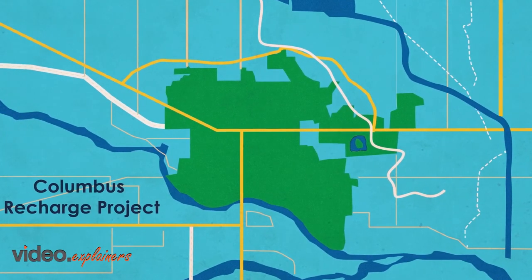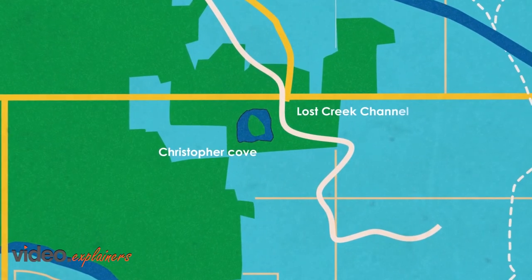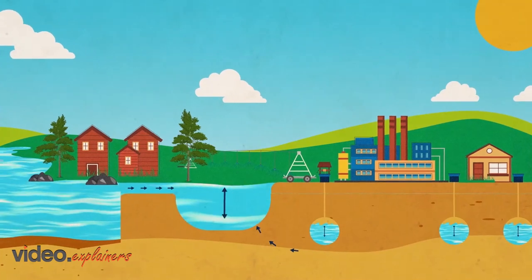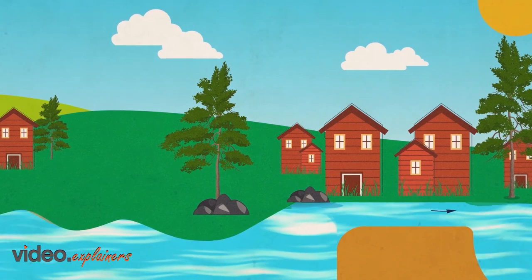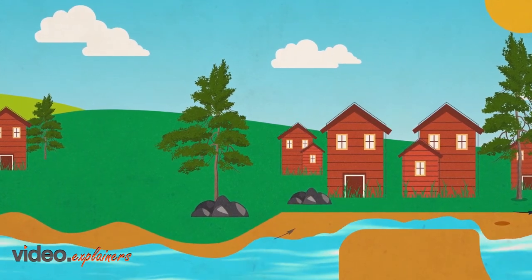The purpose of the Columbus Recharge Project through the Lower Loop Natural Resources District and a number of partners was to mitigate declining groundwater levels in the area. It was observed that the water levels near Columbus were falling.